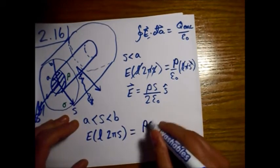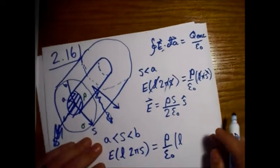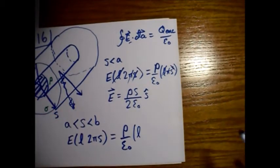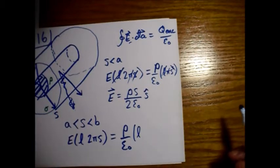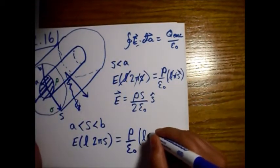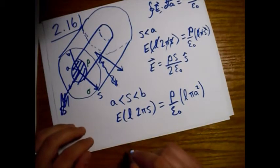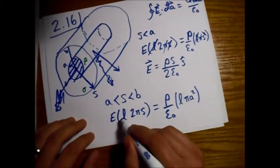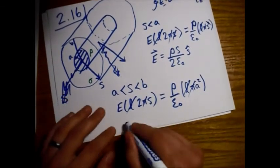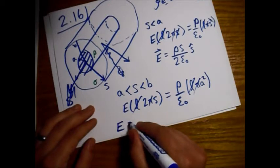We'll still have the rho and epsilon naught, still have the same length. But now instead of pi s squared, which is what we were using for the volume of our Gaussian surface, it's just going to be the volume of the inner cylinder, so pi a squared. This is going to be in the s hat direction. We can cancel the pi and the l.